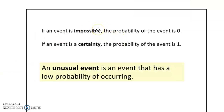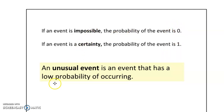If an event is impossible, the probability is zero. If the event is certain, the probability is one. Unusual refers to a probability that is low — this is not a hard and fast rule, but unusual could be considered like 0.1 or 0.05, just on the lower end of the probability spectrum.